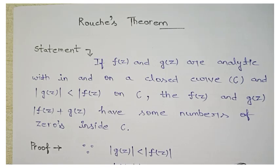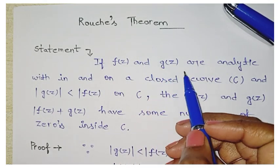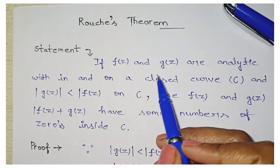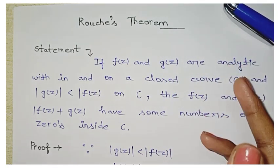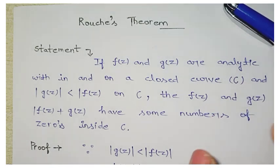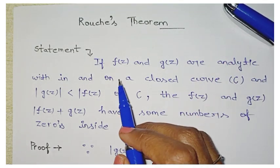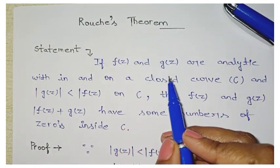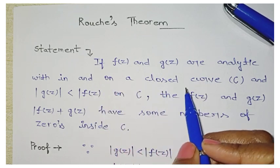Hi everyone, I'm Ayushi Shukla and this is Rouché's Theorem. The statement of the theorem is: if f(z) and g(z) are analytic functions — an analytic function is a single-valued function which is defined and differentiable at each point of a domain — so f(z) and g(z) are analytic functions within and on a closed curve C.